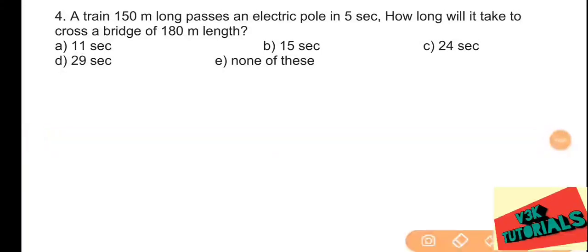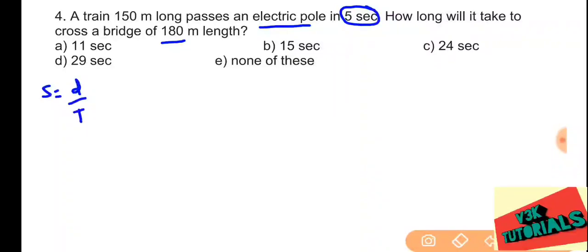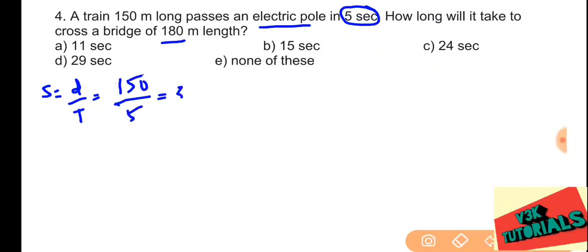Problem number four: a train 150 meters long passes an electric pole in five seconds. How long will it take to cross a bridge of 180 meter length? First we find the speed: speed equals distance divided by time. Distance is 150 meters and time is five seconds, so speed is 30 meters per second.